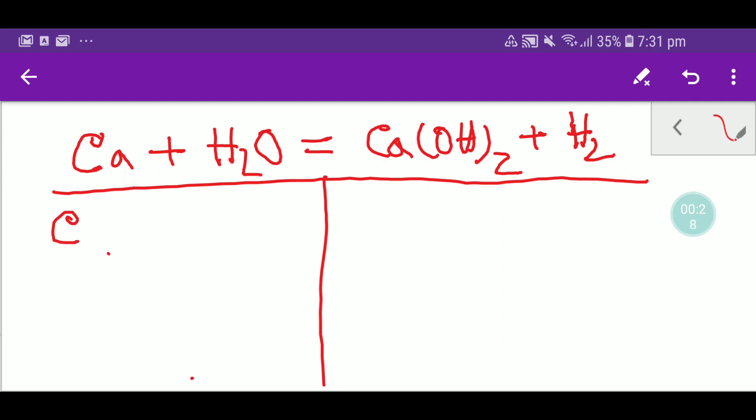We have here one calcium and here we have two hydrogen, and here we have one oxygen. On the right hand side we have one calcium, and here we have two oxygen and we have two hydrogen here.